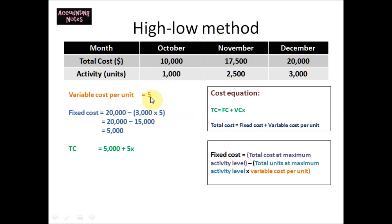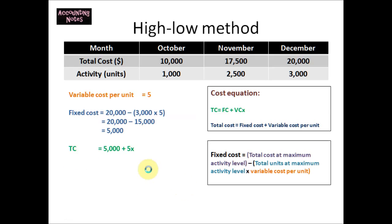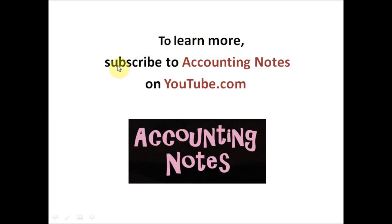Now that we have both the variable cost and the fixed cost, our cost equation is complete. Total cost equals fixed cost plus variable cost per unit: TC = $5,000 + $5x. To learn more, subscribe to Accounting Notes on YouTube.